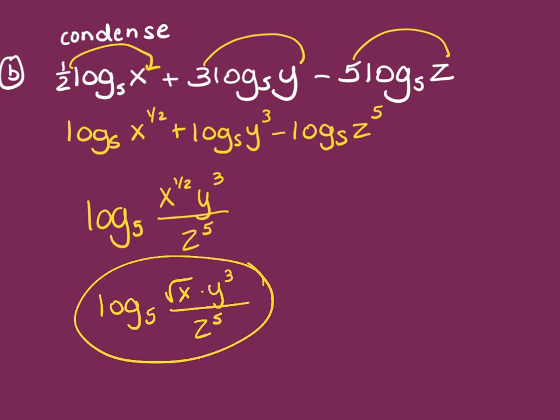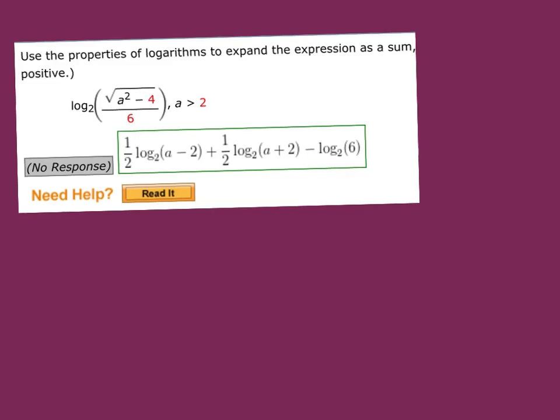So this becomes log base five square root of x times y³ over z⁵. And the order on that numerator doesn't matter. So if you put the y³ on the front of that square root of x, that's okay, too. But that's as simplified as it gets. You don't really, they would go around the whole thing. So the fraction kind of groups it. So the most simplified form of that one half is the square root. Any questions come up on the homework? I know I answered a couple yesterday while we were here, but how about folks from home? Any questions come up on the homework while you're working on it?